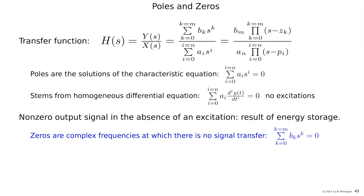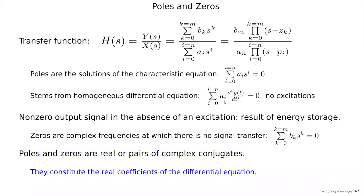Poles and zeros must be real or must appear as pairs of complex conjugates because they stem from the coefficients of the differential equations, and the coefficients of the differential equations are just real things—real coefficients, real variables. So that is poles and zeros, this introduction.